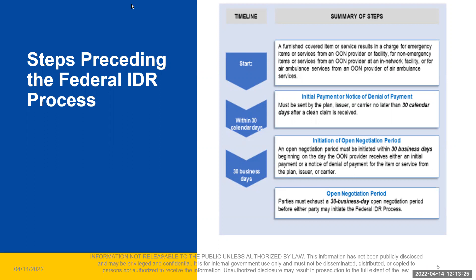The next question is: many people calculate QPA differently — does the party have to provide details on how it is calculated? The first surprise billing interim final rules set forth how the QPA must be calculated and required that plans and issuers make certain disclosures with each initial payment or notice of denial of payment, and that plans or issuers must provide additional information upon request of the provider or facility. This information must be provided in writing, either on paper or electronically, to a non-participating provider or emergency facility or provider of air ambulance services when the QPA serves as the recognized amount.